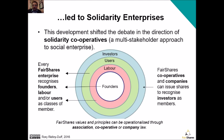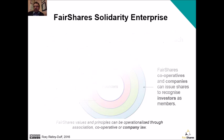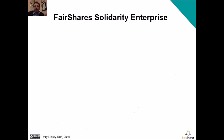Fair shares values and principles can be operationalized through associations, cooperatives and companies. If you use the association model, all you do is create memberships, but if you use the cooperative and company model you can also issue shares. Let's consider the order in which things happen in a fair shares solidarity enterprise, because an enterprise is built over many years and all you need to be sure is that your constitution will provide for the future — you don't have to configure everything from the outset.